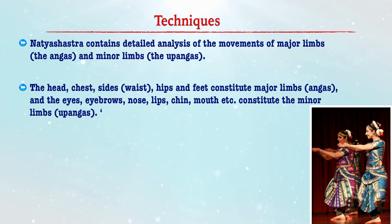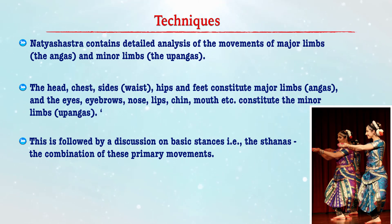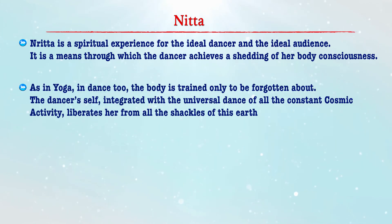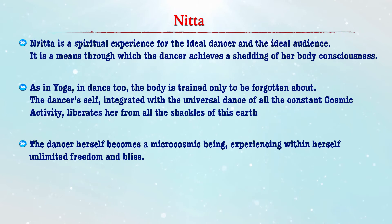Nritta contains detailed analysis of the movement of major limbs — the Angas — and the minor limbs — the Upangas. The head, chest, sides, waist, hips and feet constitute the major limbs known as Angas, while the eyes, eyebrows, nose, lips, chin and mouth constitute the minor limbs known as Upangas. There is also discussion on the basic Sthanas, which are combinations of primary movements. Nritta is a spiritual experience for the ideal dancer and the ideal audience — a means through which the dancer achieves a real sense by shedding body consciousness. As in yoga, in dance too the body is trained only to be forgotten, and the dancer self-integrates with the universe, experiencing unlimited freedom and bliss.